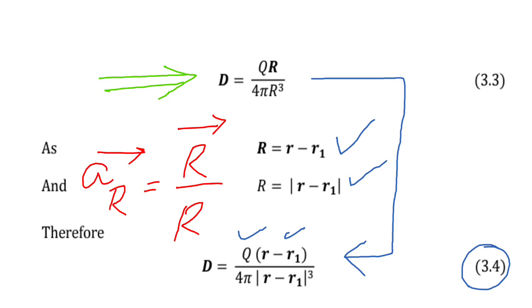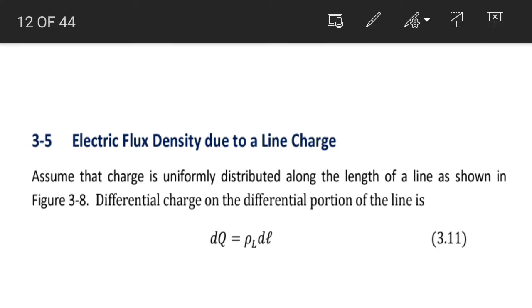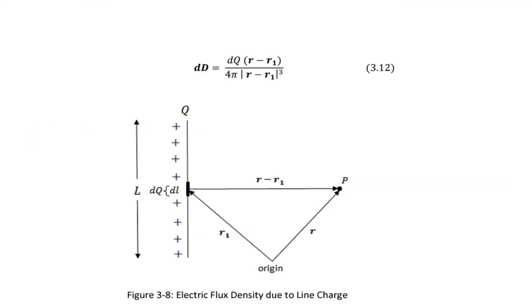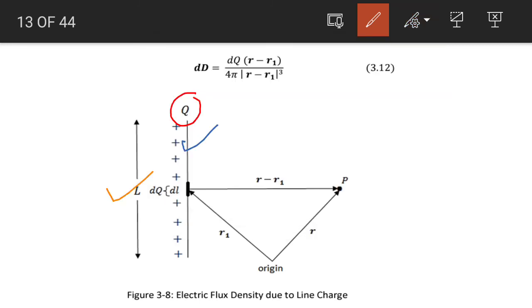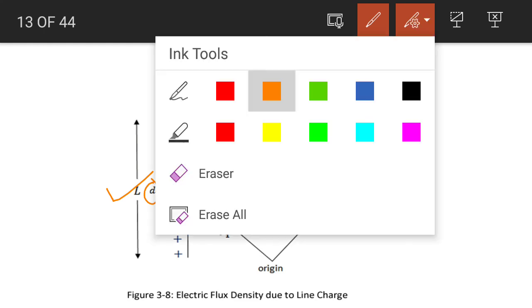Electric flux density due to a line charge: we consider a line charge. The magnitude of the charge on this line is represented by Q and the length is represented by l. We consider a small portion of this line represented by dl, with the charge on this small portion being dQ. R1 is the position vector of the source.